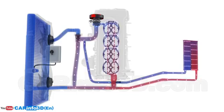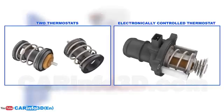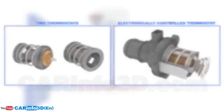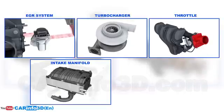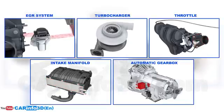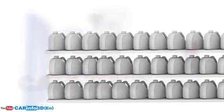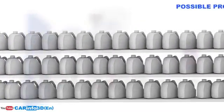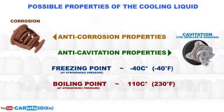There are other, more complicated layouts. They may contain two thermostats, electronically controlled thermostats, as well as more complex cooling circuits that keep the EGR system, turbocharger, throttle, intake manifold, and automatic gearbox oil at the appropriate temperature. It should also be mentioned that the system employs a special coolant with specific chemical features, such as anti-corrosion, anti-cavitation, or non-freezing properties. This concludes our review.